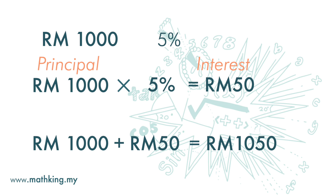So the amount of interest that we get at the end of the year is P times R, where P is the principal and R is the interest rate per year.